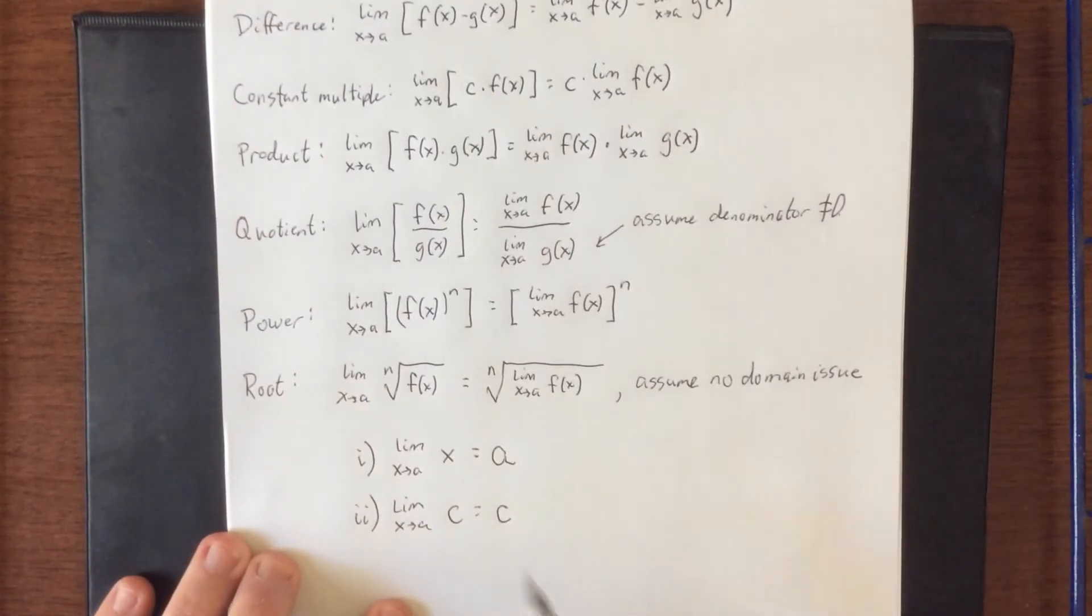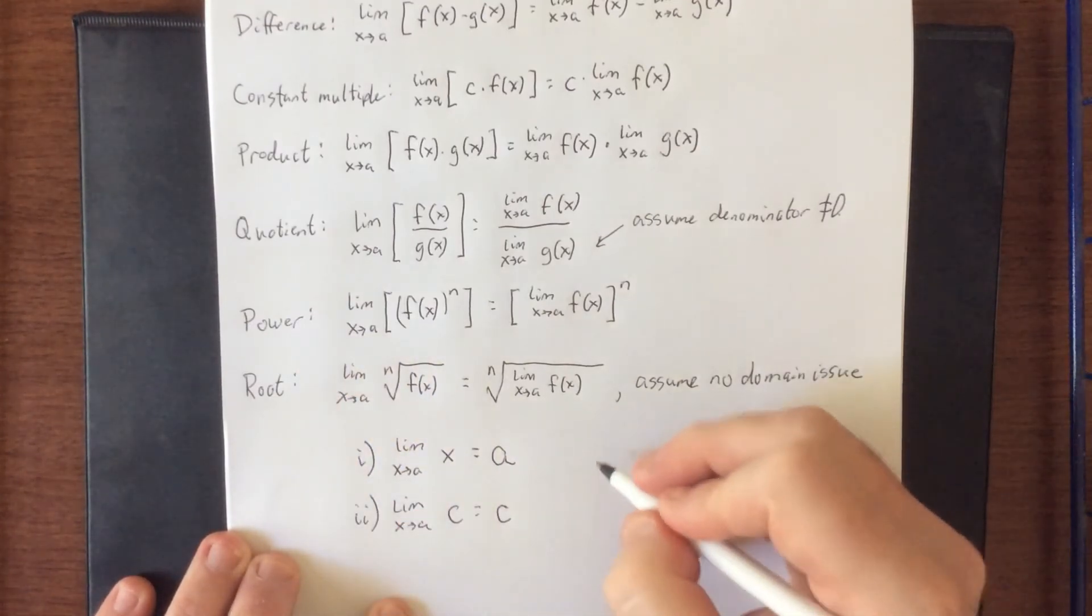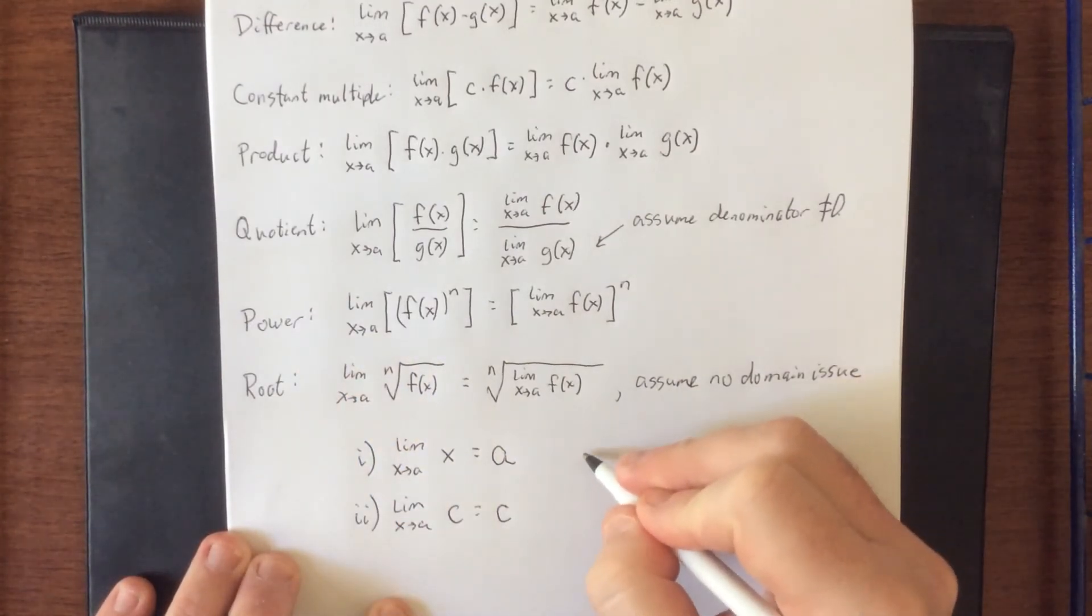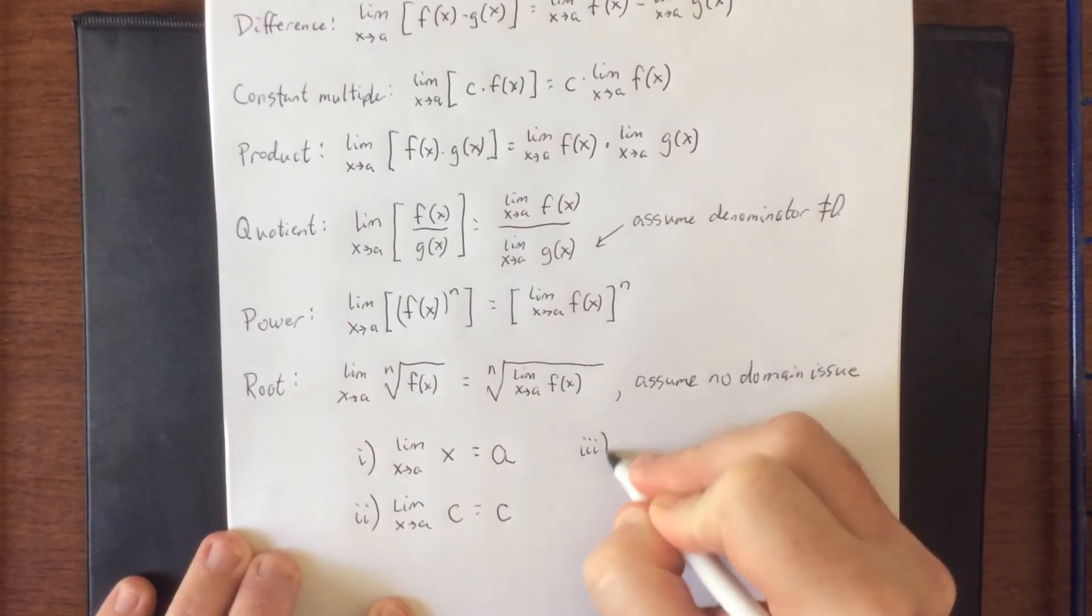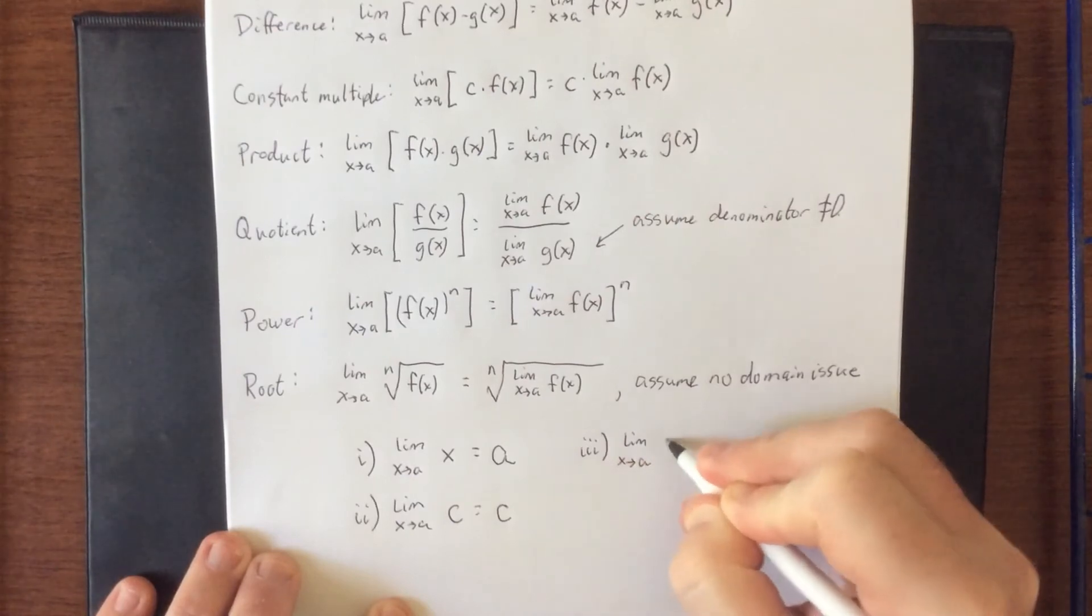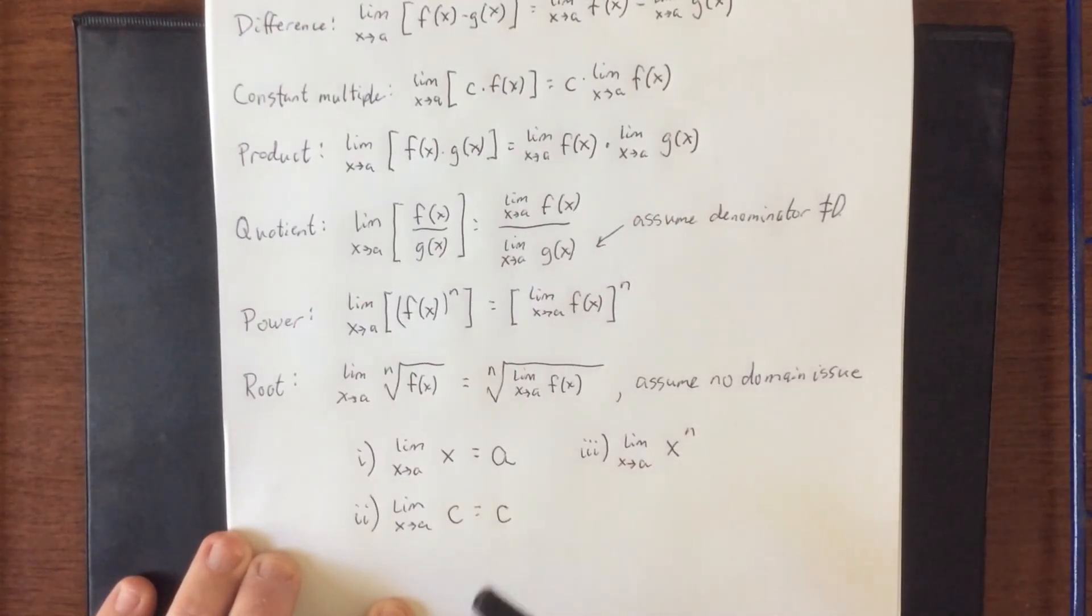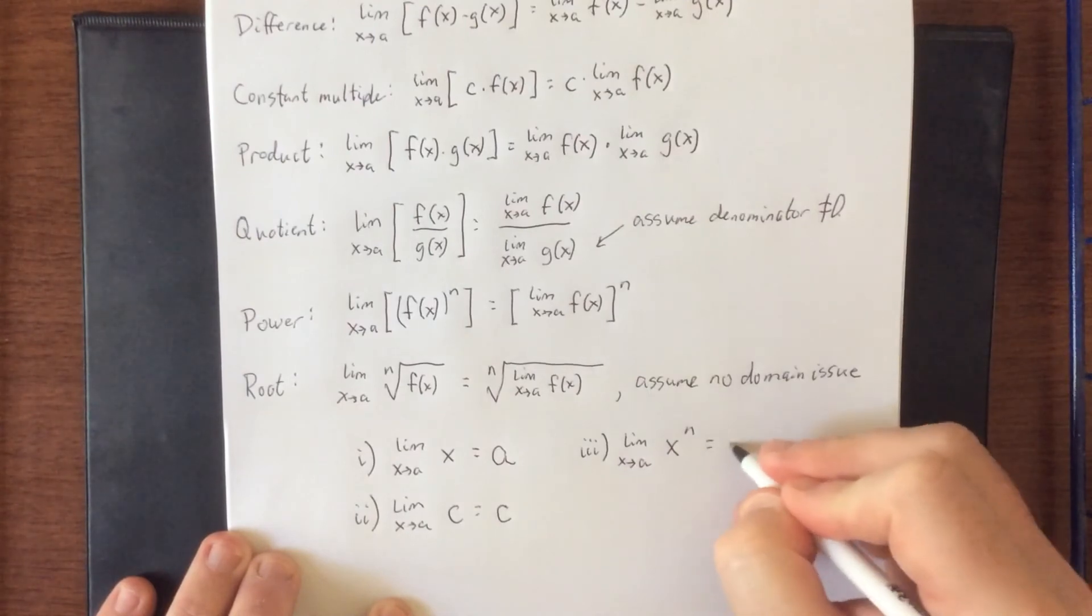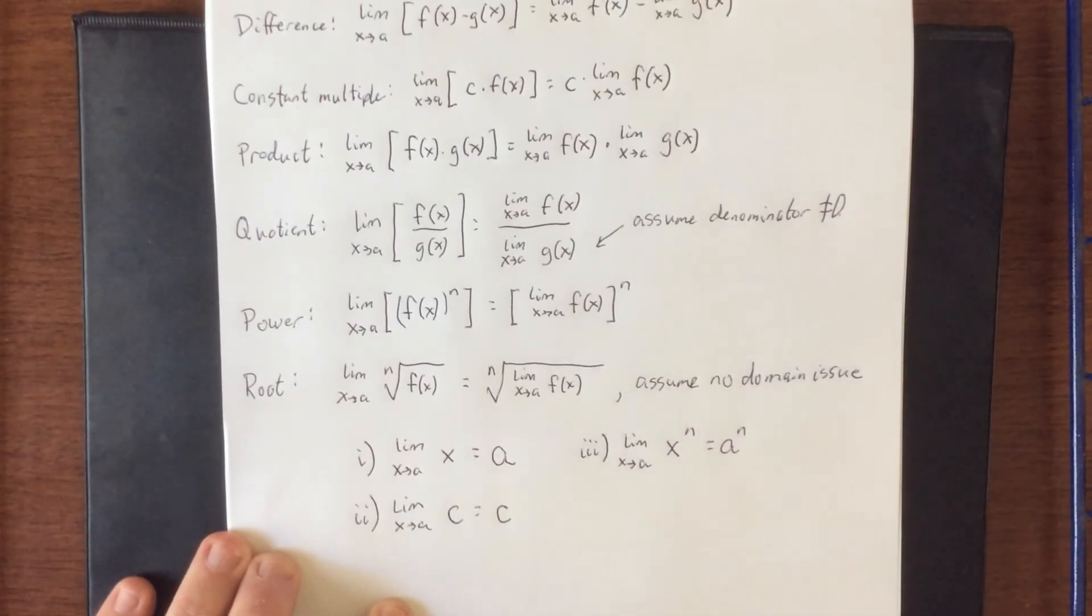Now, if you were to take number one and combine it with the power rule, then there is another limit law that you can create. We'll call this number three, despite the fact that the book doesn't have it in here. So if you combine this evaluation law with the power law and say take the limit as x approaches a of x raised to the nth power, this is going to be a raised to the nth power.